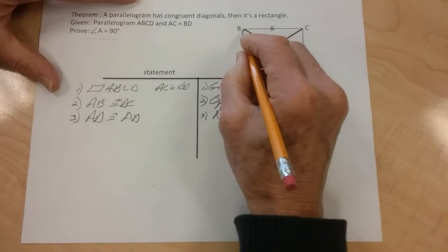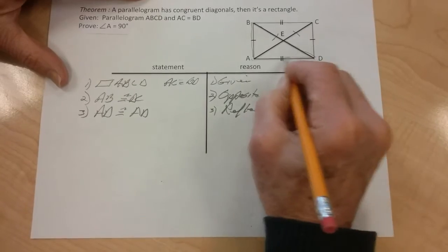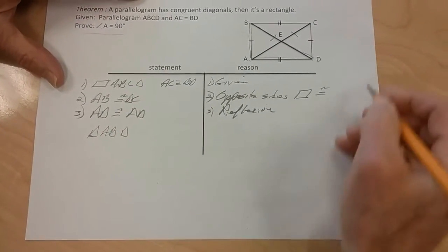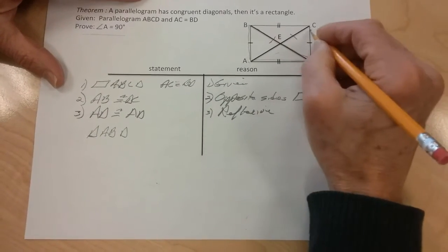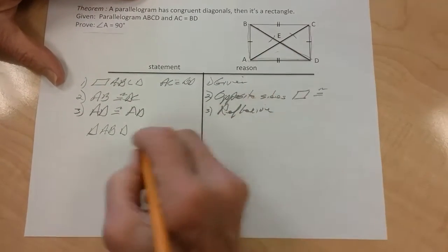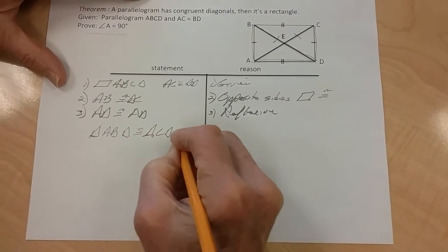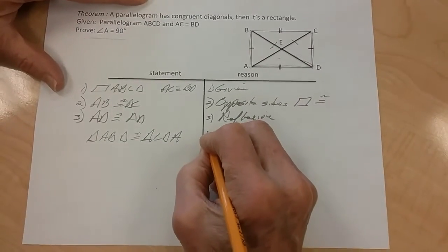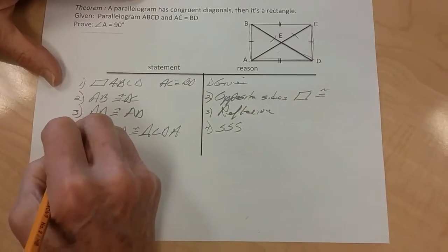Therefore, I know that this triangle here, we'll call this ABD, triangle ABD, is going to be congruent to triangle CDA. And this is done by side, side, side. We've got three sides there, so that's step number four.